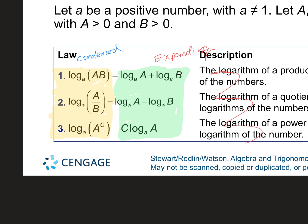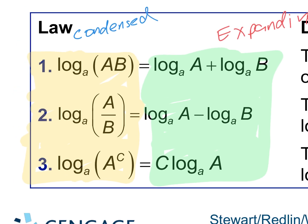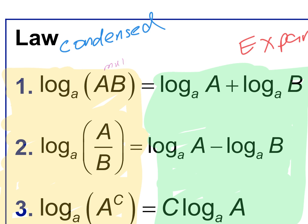On the condensed side in yellow, the word log is written one time. Look at number one — what is happening between A and B? Multiplication. So when something is condensed and it's multiplied, when you pull it apart, multiplication becomes addition. If something is already pulled apart and being added and you smush it together, it becomes multiplication. Multiplication and addition go together.